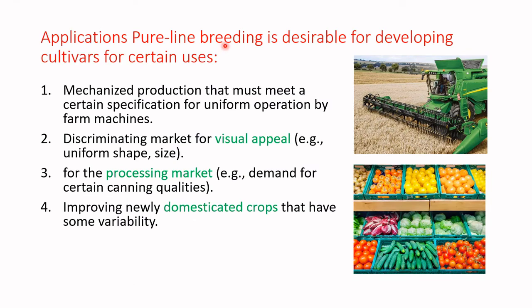Applications of pure line breeding include: suitability for use with mechanical harvesters, which require uniform maturity across the cropland — non-uniform maturity requiring two to three more pickings is not user-friendly for such harvesters. Pure line varieties also provide a good visual appearance of uniformity. In processing markets there is high demand for high and uniform pulp quality and canning qualities, which can be fulfilled by a pure line breeding program. Newly domesticated or introduced varieties with some variability can also be improved with pure line selection.